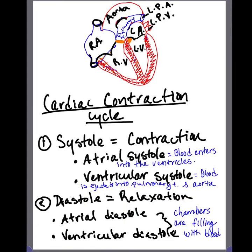The cardiac cycle consists of alternating periods of contraction and relaxation. Contraction is known as systole, while relaxation is known as diastole. Systole is made up of atrial systole, where both atria are contracting, and ventricular systole, where both ventricles are contracting. During diastole — whether atrial or ventricular — the chambers are filling with blood because they are relaxed.